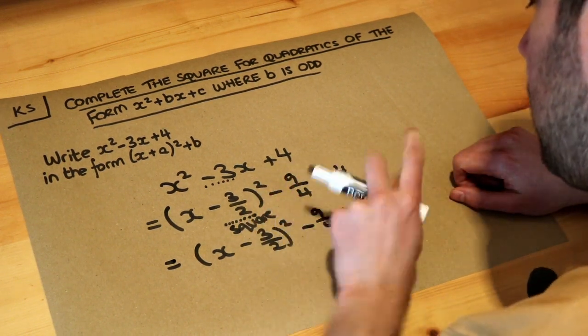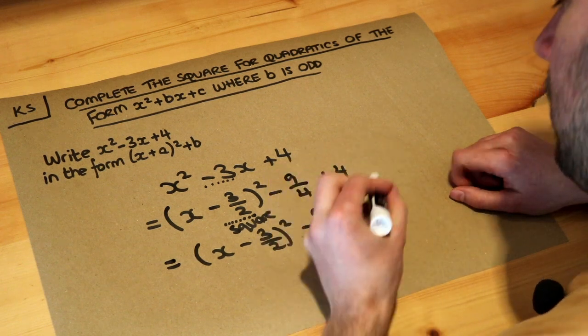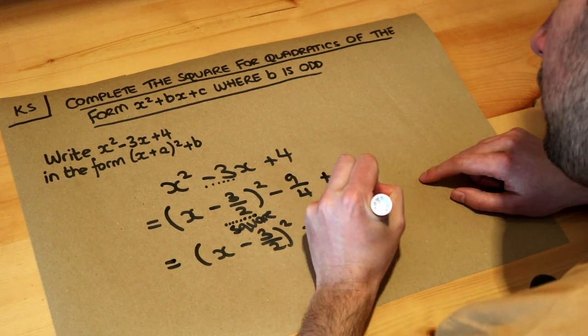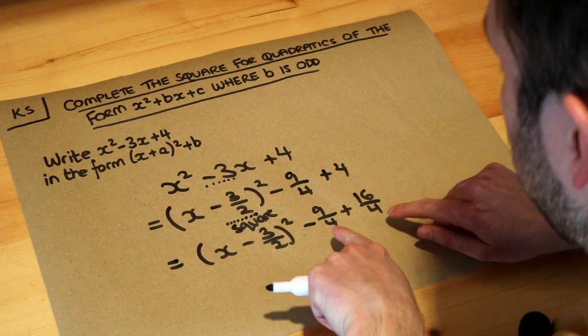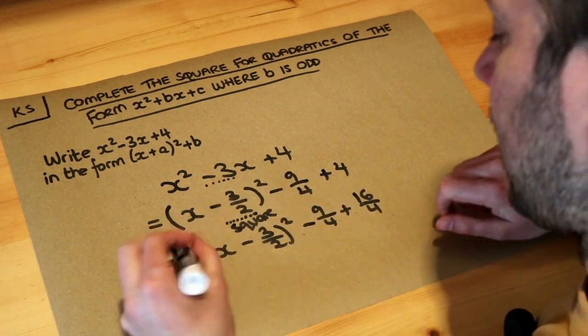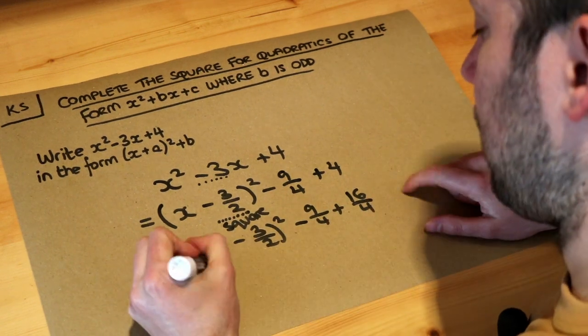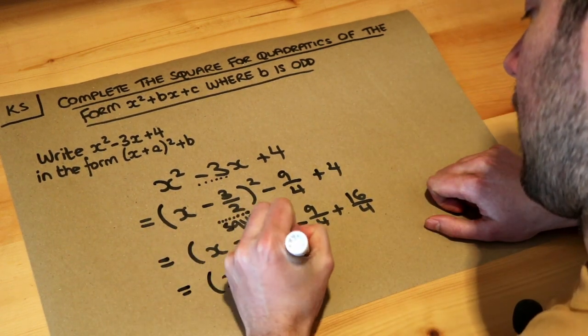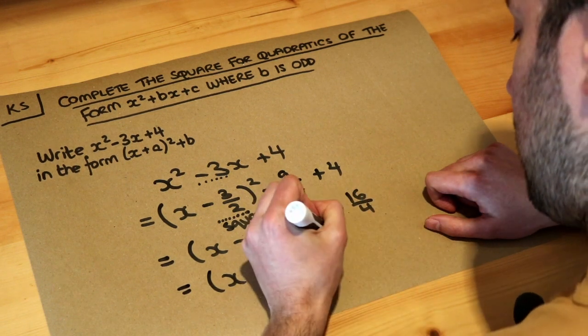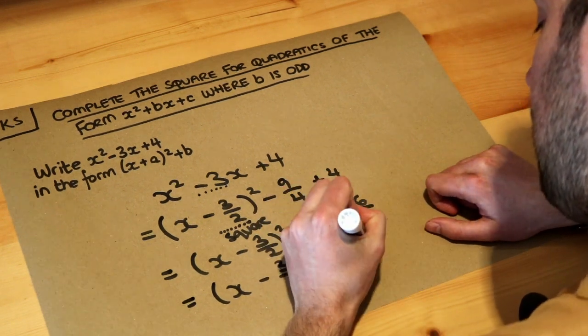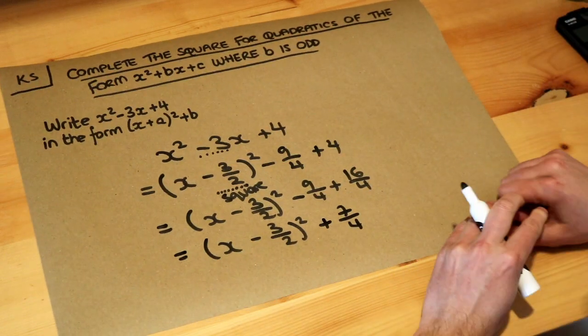So what divided by 4 is 4? Well it's 16. 16 quarters is the same as 4. Now because we've got the same denominator it allows us to easily combine these numbers here. So we've got x minus 3 over 2 squared minus 9 plus 16 is 7, so it's positive 7 over 4, and that's the final answer.